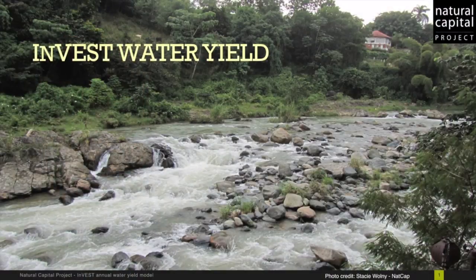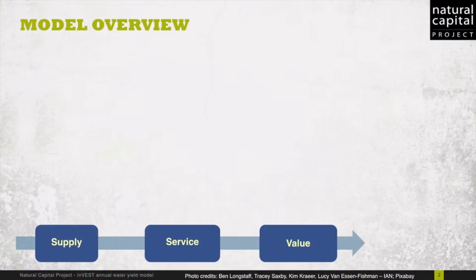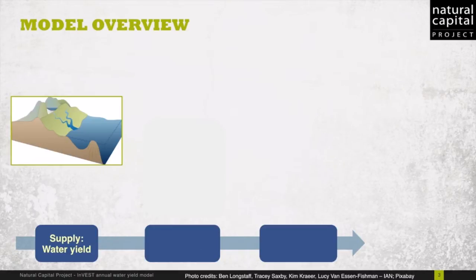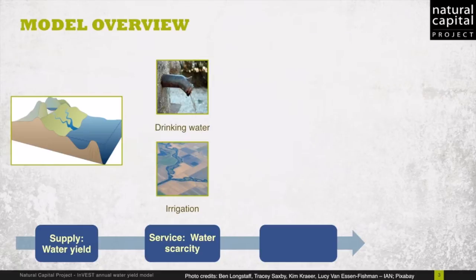The water yield model follows the supply-service-value framework common across the InVEST toolset. Here, supply represents the biophysical processes of rainfall and runoff on the landscape, which produce rivers, and we call this water yield. Meanwhile, people in the landscape use some of that water for things like drinking and irrigation. What remains is the service called water scarcity.